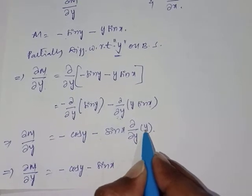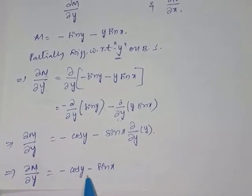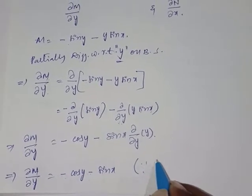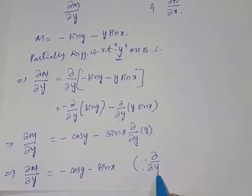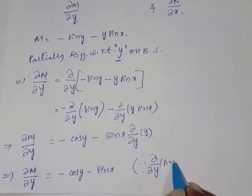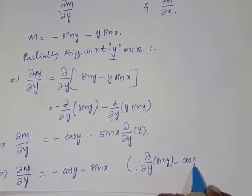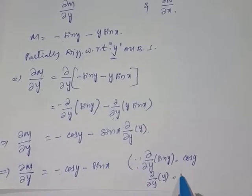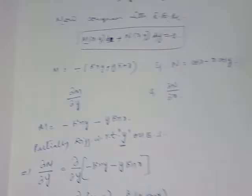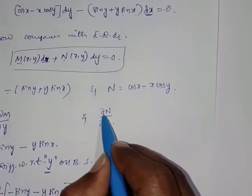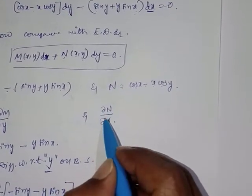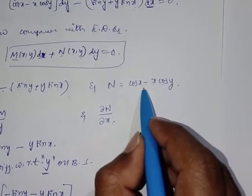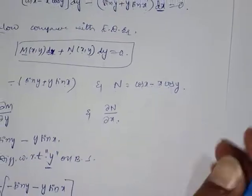∂/∂y of sin y = cos y, and ∂/∂y of y = 1. So ∂M/∂y = -cos y - sin x. Now we need to find ∂N/∂x. Partially differentiate N with respect to x on both sides.